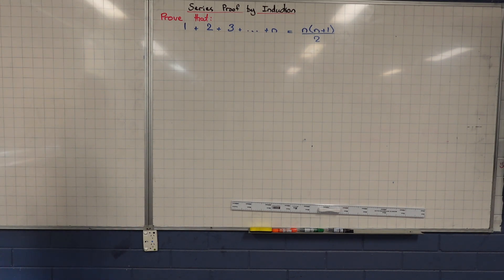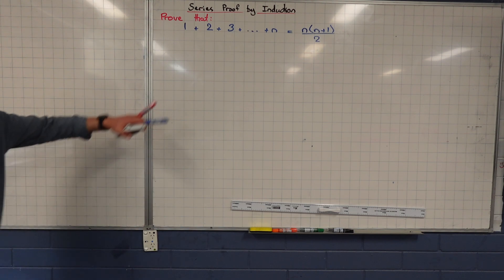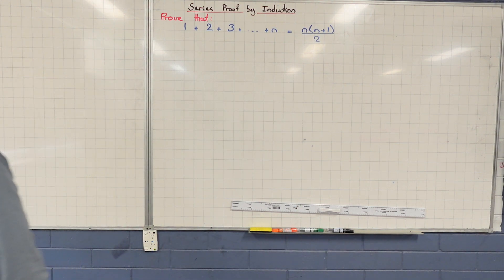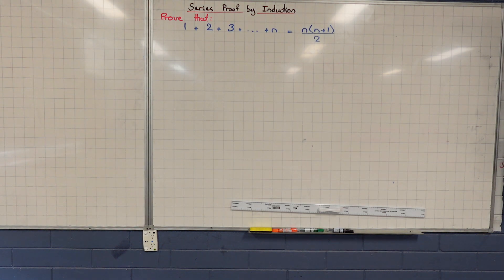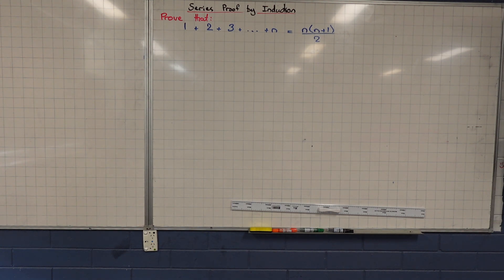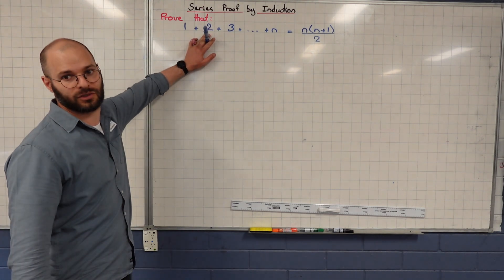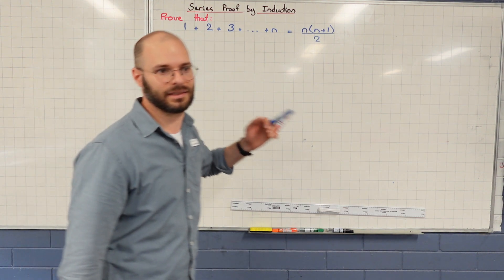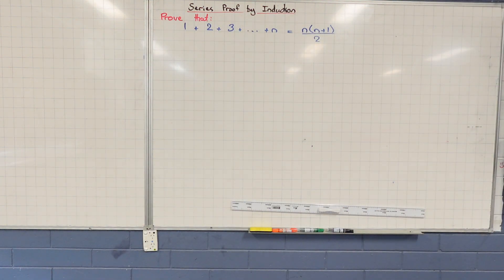So what we want to do is prove a series by proof by induction. Now on the board here, we've got what clearly looks like an arithmetic series because it's a sum of regularly changing numbers and it all equals a definitive expression, n times n plus one all over two. Now in stage one, we typically wouldn't give it to you like this, or if we did, we'd allow you to just make the assumption that it can be sigma notation to prove it. What we're going to do is be more explicit.